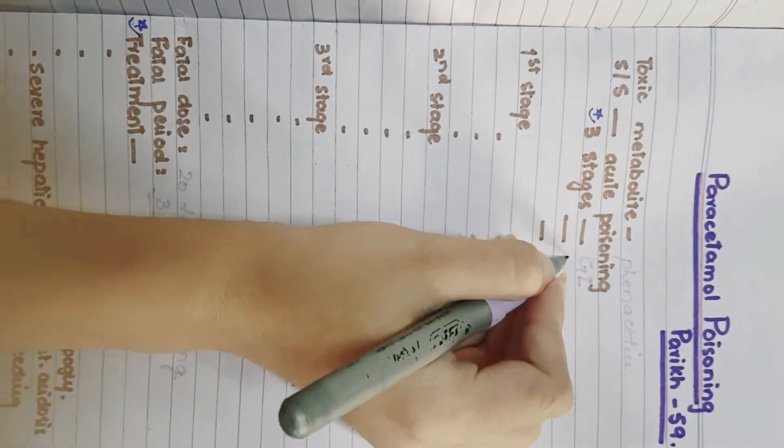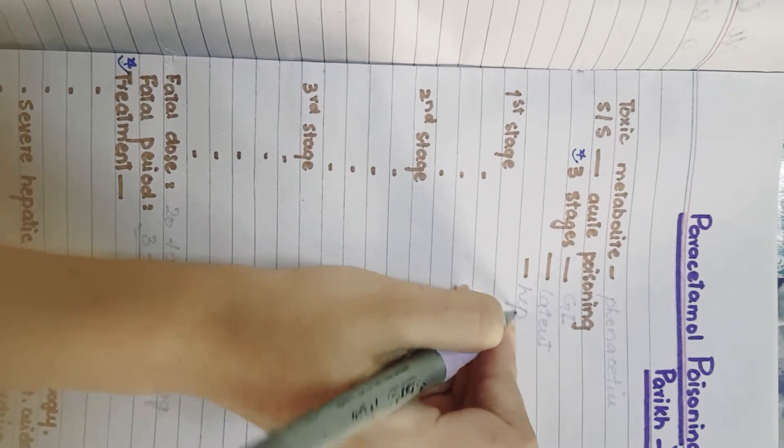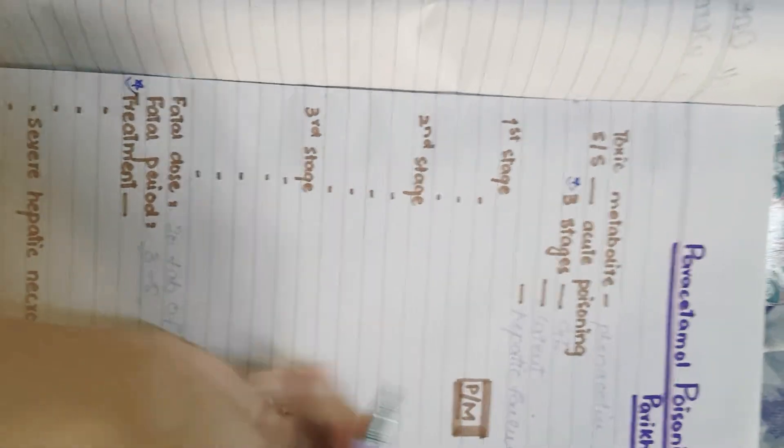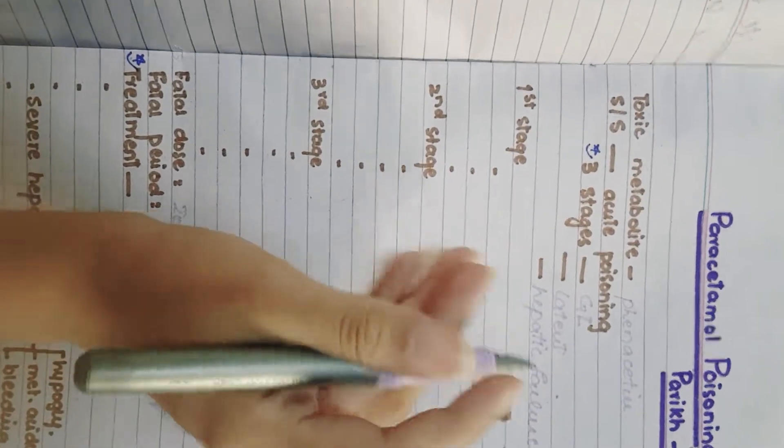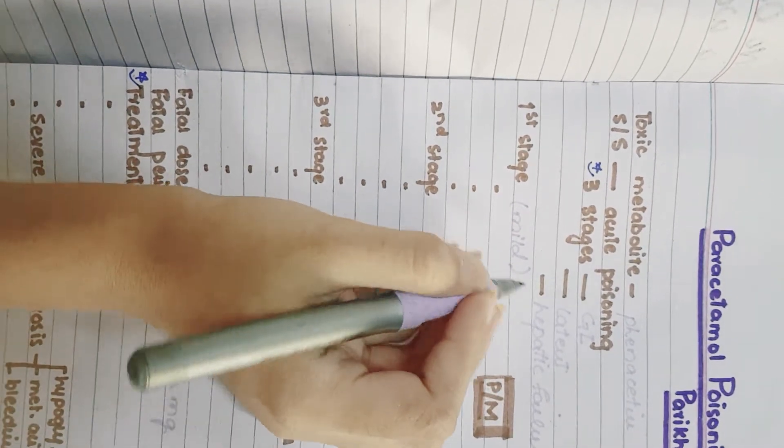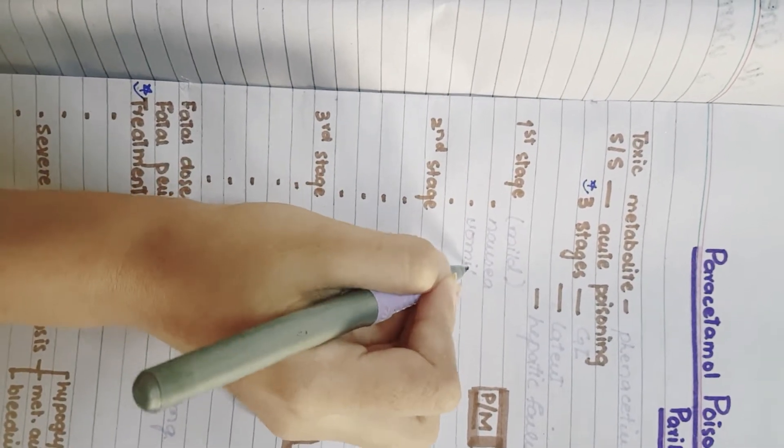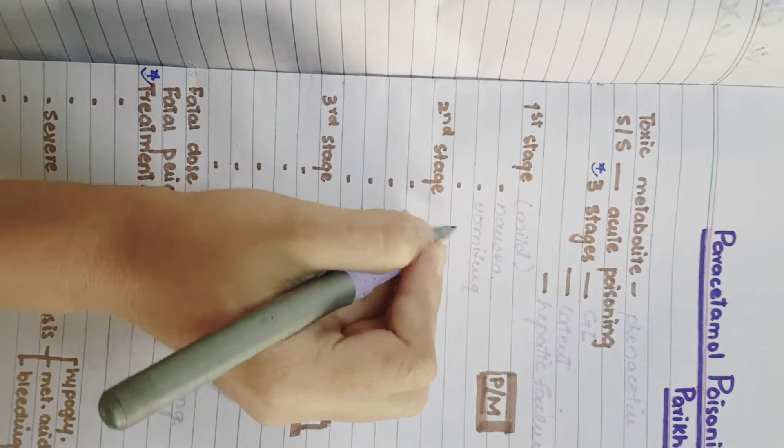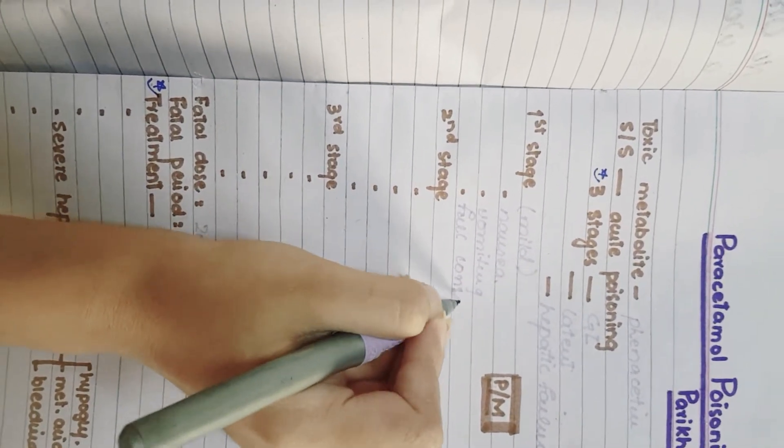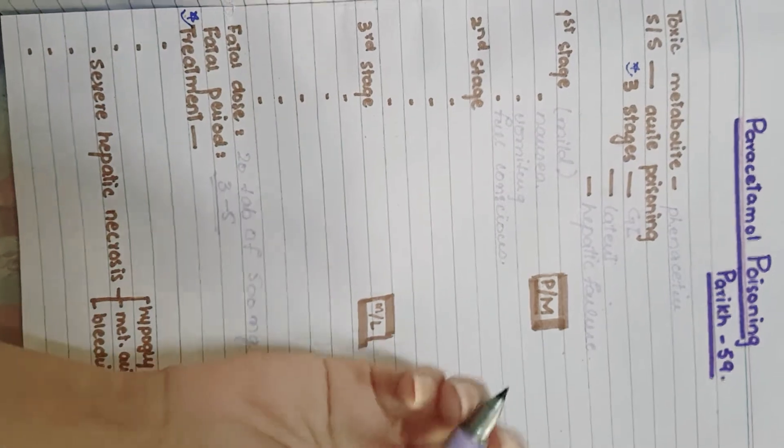The second one is known as latent stage, and the third one is hepatic failure stage. In the first stage, there are mild symptoms such as nausea, vomiting, and the patient is in full consciousness. This often leads to a false sense of security that the patient is going to be okay.